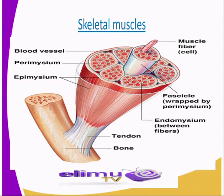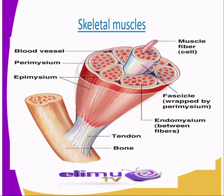Skeletal muscles are tissues which make up the skeleton. As we are aware, living organisms are normally made up of skeletons, so the skeleton is made up of these tissues as you can see on our diagram. These skeletal tissues have blood vessels, which are responsible for transportation of oxygen, food materials, and waste products to different parts of the body. We also have the perimysium and the epimysium.